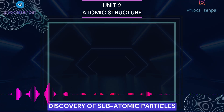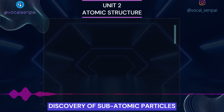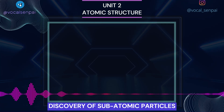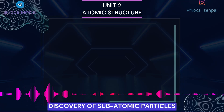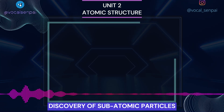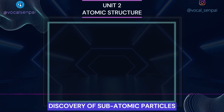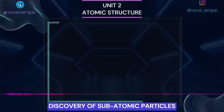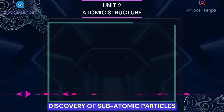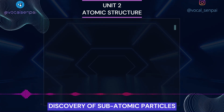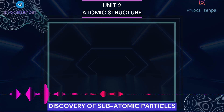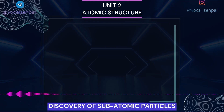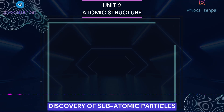In the absence of electrical or magnetic field, these rays travel in straight lines. In the presence of electrical or magnetic field, the behavior of cathode rays is similar to that expected from negatively charged particles, suggesting that the cathode rays consist of negatively charged particles called electrons. The characteristics of cathode rays (electrons) do not depend upon the material of electrodes and the nature of the gas present in the cathode ray tube. Thus, we can conclude that electrons are basic constituents of all atoms.